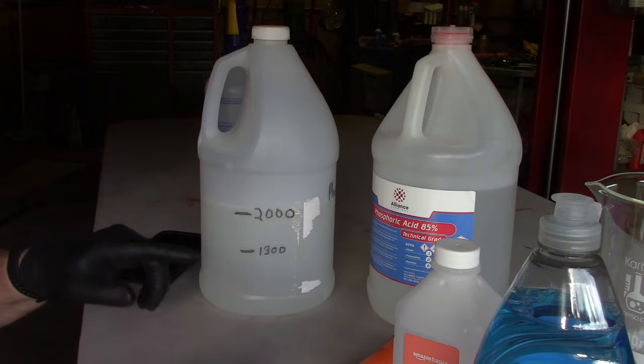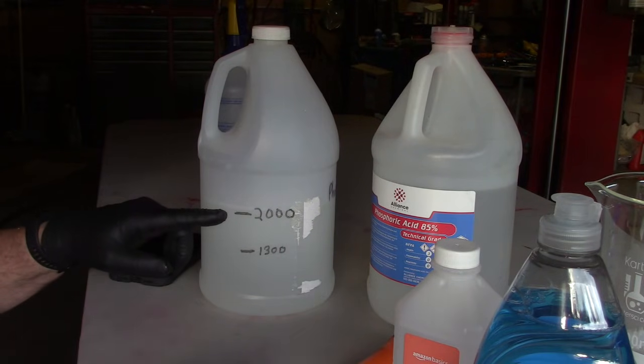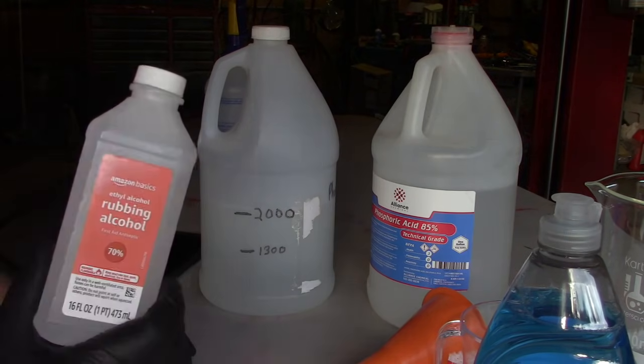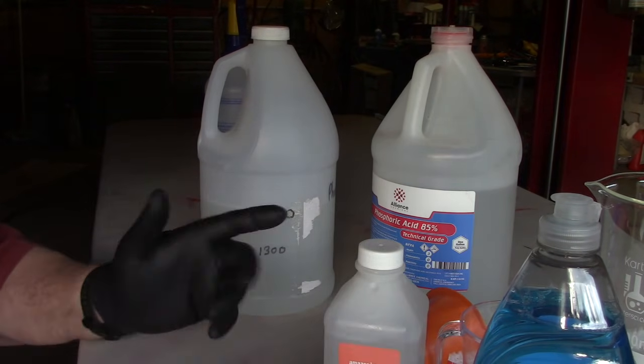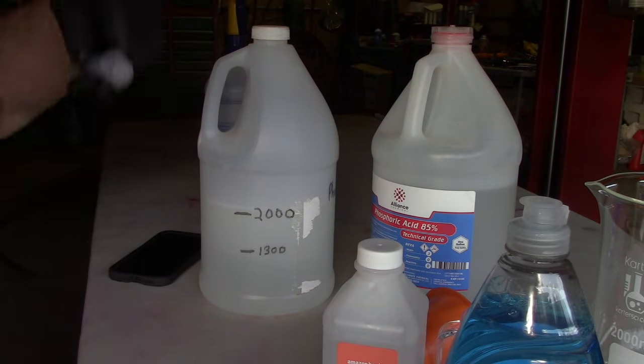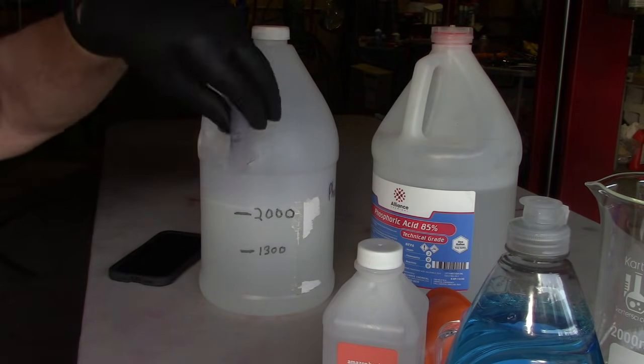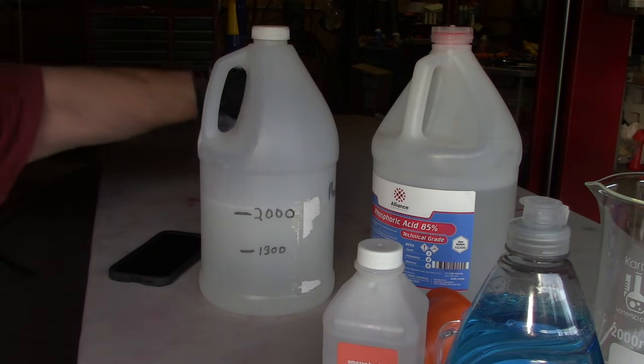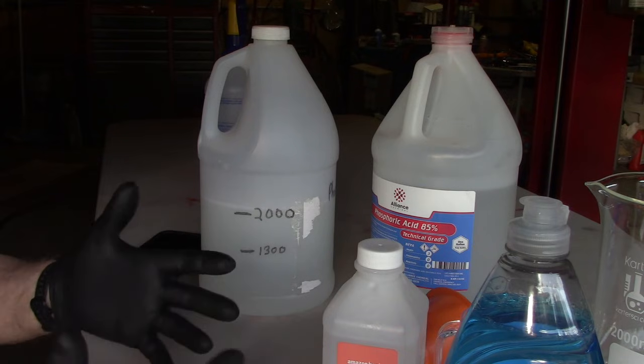I don't have to do any calculation. I just do 1300 milliliters of water, 700 milliliters of the 85 percent phosphoric acid, and add my one part of ethyl alcohol, the 100 milliliters. And then just a syringe full. This is dedicated to this process. I just have this, and this is what I use it for.